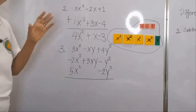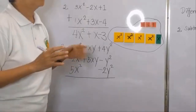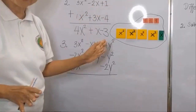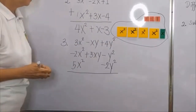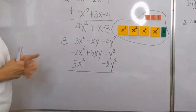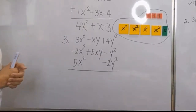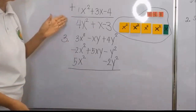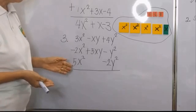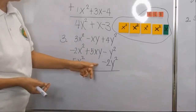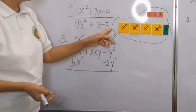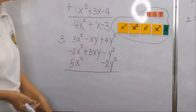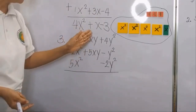Now that we have concretized our addition of polynomials using algebra tiles, we can go to the abstraction — without the algebra tiles, we can do our addition. The third example has 3 polynomials added together. Remembering that the same or similar terms should be lined up in one column. If a polynomial has no xy term, just leave it blank, and all the y squared terms are placed in one column.